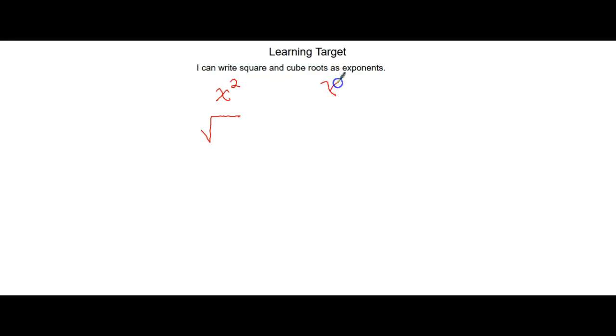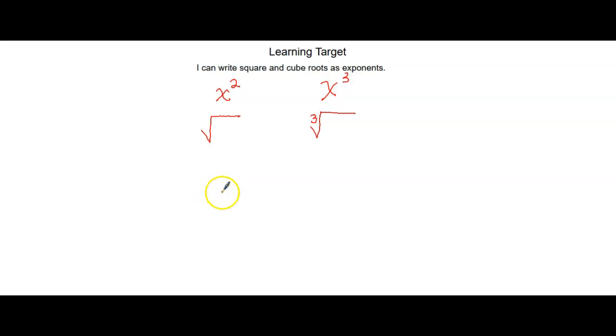If you think about what it means to square a number, we write it as a number squared. When we square root something, we use the radical symbol. When we cube something, we take it to a power of 3, and when we do a cube root, we have an index of 3. You might wonder why the cube root has a 3 but the square root doesn't have a 2 written. It's similar to how x has a coefficient of 1 even when we don't write it — if there's no number on the radical sign, we automatically assume it's a square root. We just don't write it because it's the default.